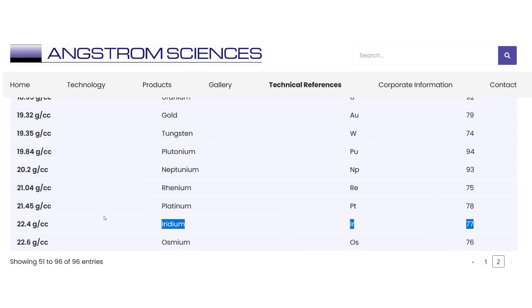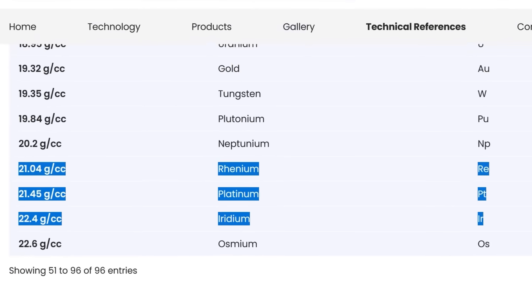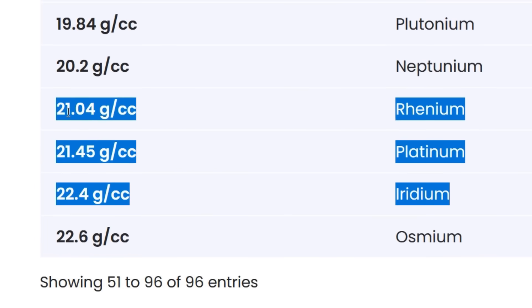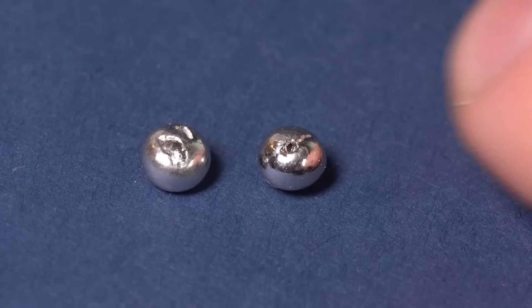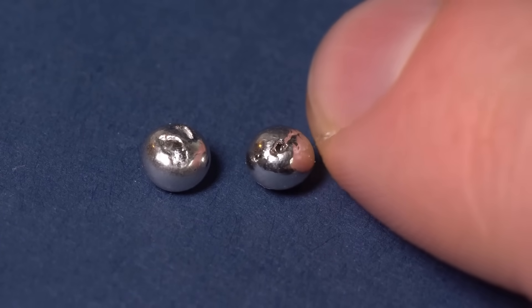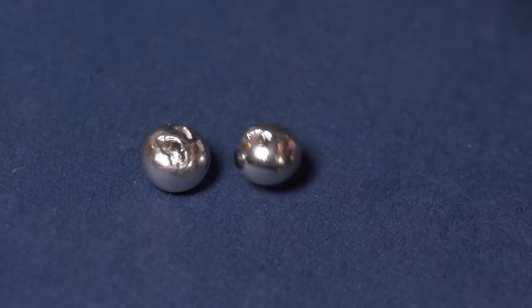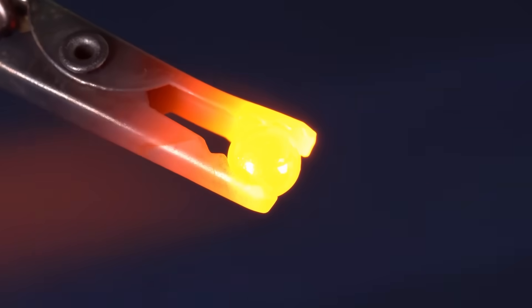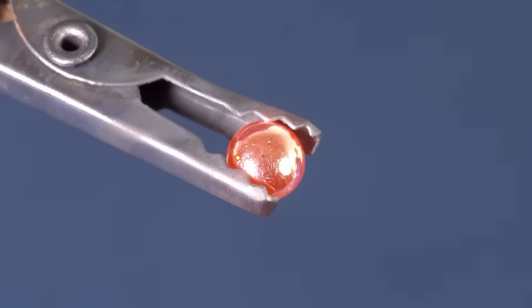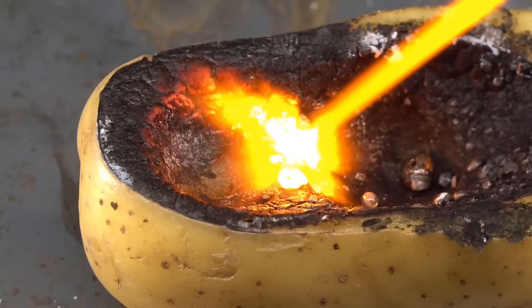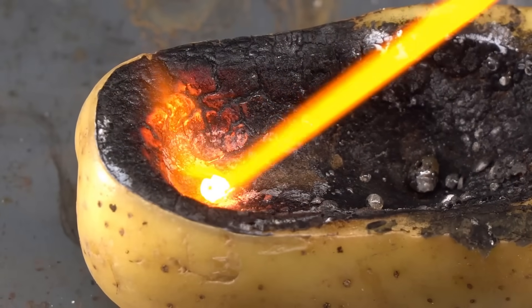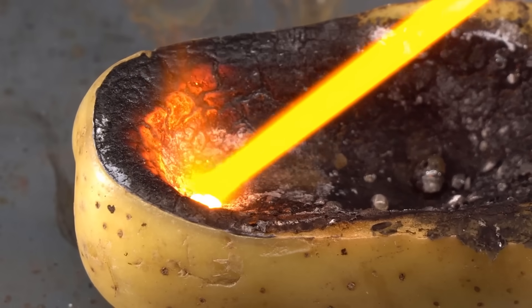However, if you break a vial of osmium tetroxide, the oxide that evaporates from it can cause quite a bit of trouble, as it is several times more toxic than potassium cyanide. According to the stories, this substance has the smell of garlic, and if you smell it, then you have already caused significant damage to your health.